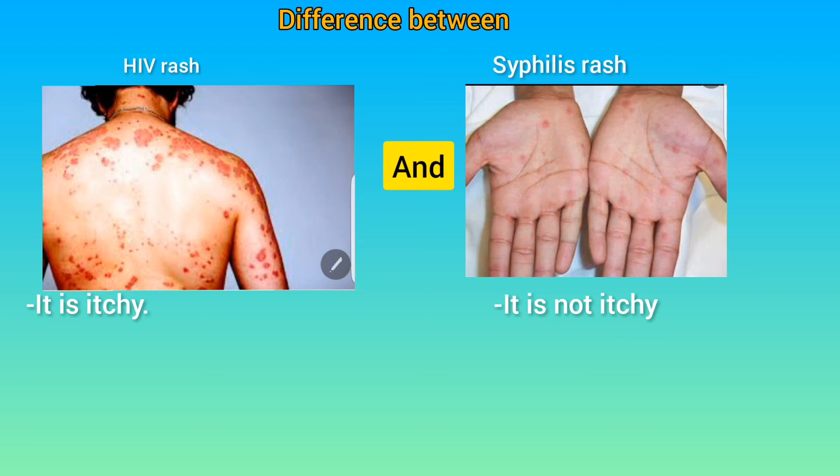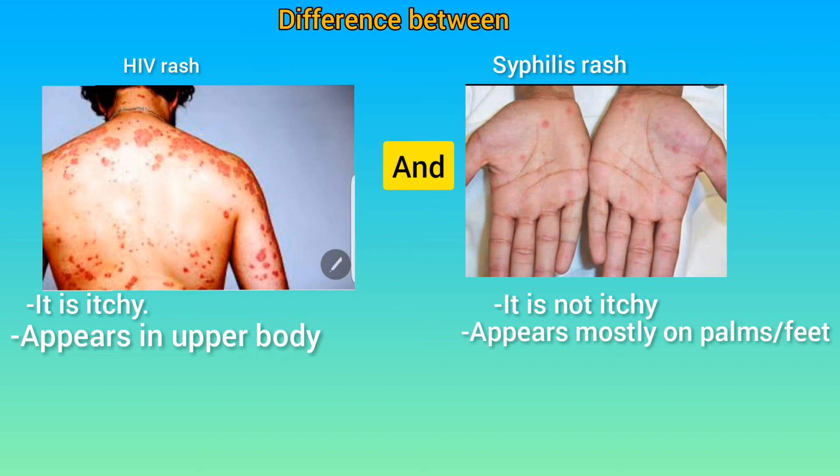The second difference is that HIV rash mostly appears in the upper part of the body, such as the face and the chest region, while syphilis rash appears mostly on the palms of the hands or under the feet, and in moist and hidden parts of the body such as the groins and the armpit.